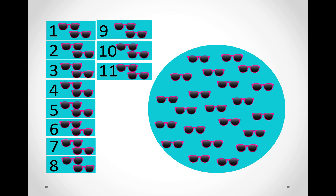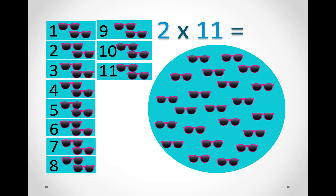In this picture there are eleven groups and in each group there are two pairs of sunglasses. So we can count in twos to find out. Two times eleven: two, four, six, eight, ten, twelve, fourteen, sixteen, eighteen, twenty, twenty-two. So our answer is twenty-two.